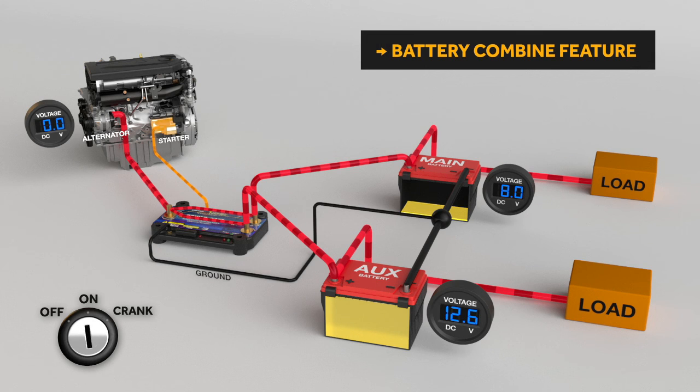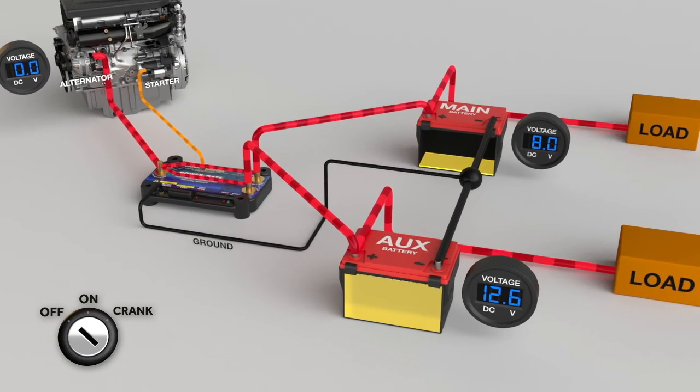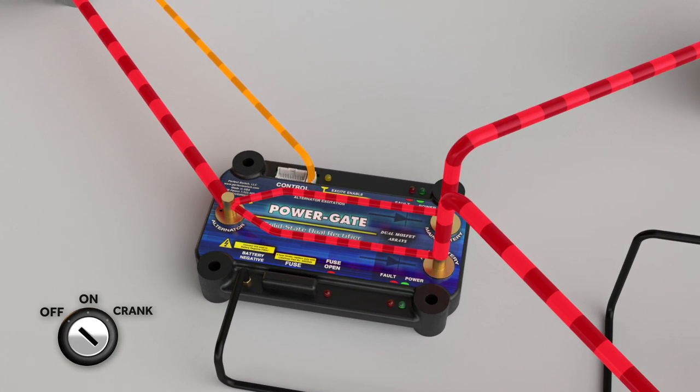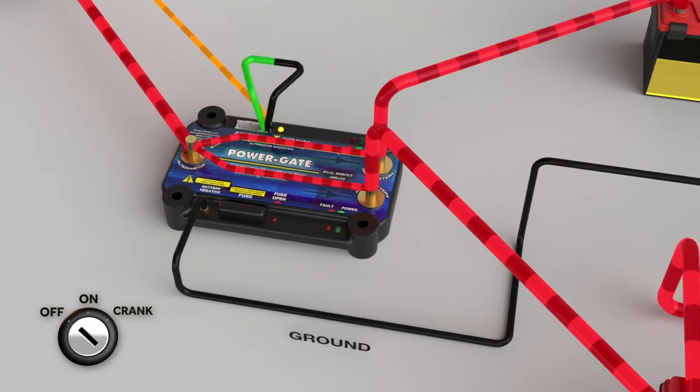If the main battery is discharged and causes a no-start condition, the battery combined feature can be used to transfer energy from the auxiliary battery to the main battery for self-jumping.